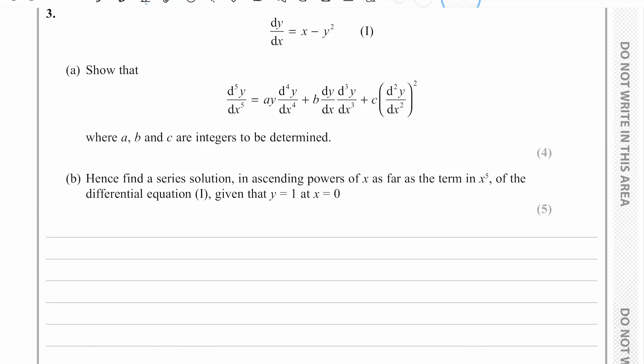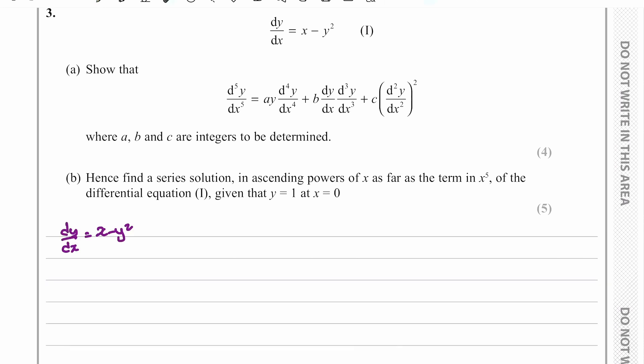Hi everybody. Here we've got a question on the Maclaurin series. We've been given dy/dx = x minus y squared, and we've been asked to work out the fifth derivative. We're going to use a combination of the product rule and implicit differentiation. We'll begin by stating that the first derivative is x minus y squared.